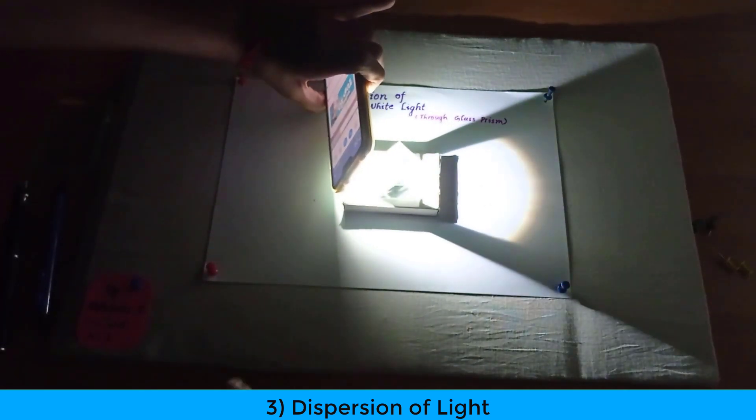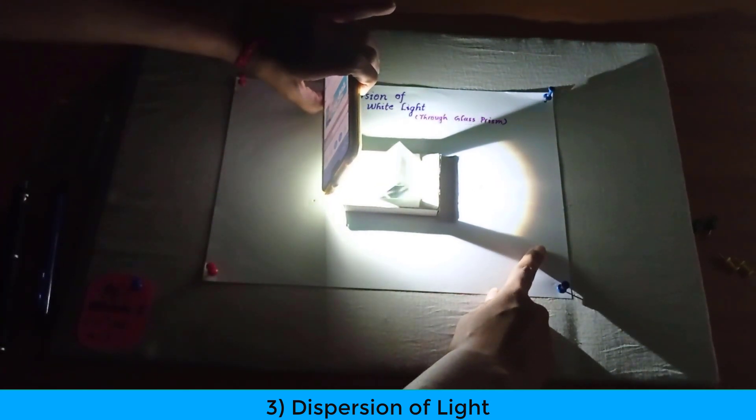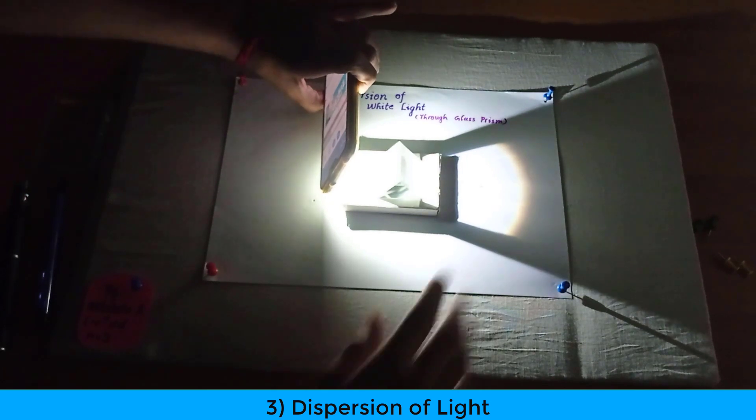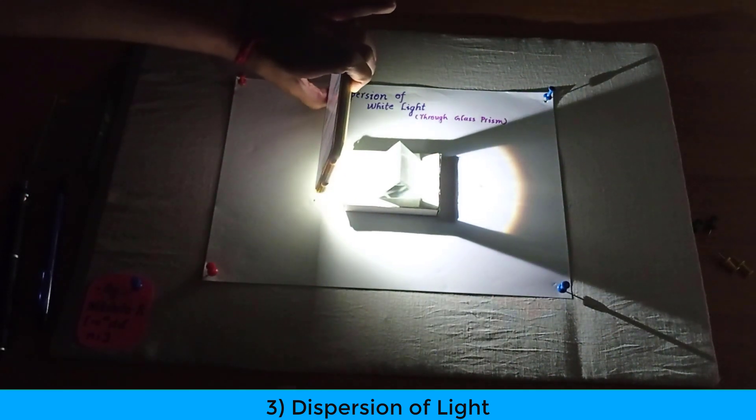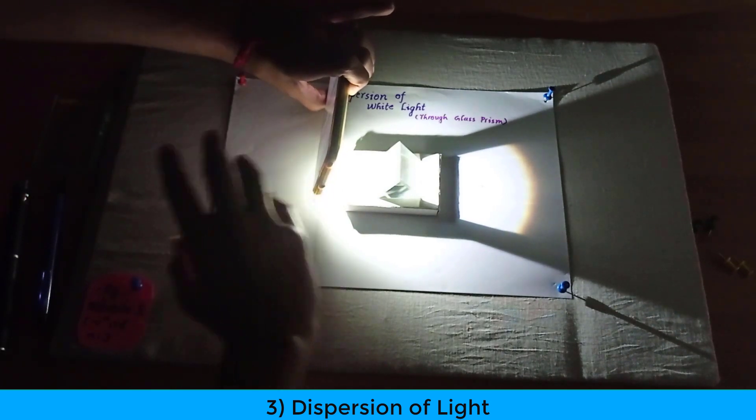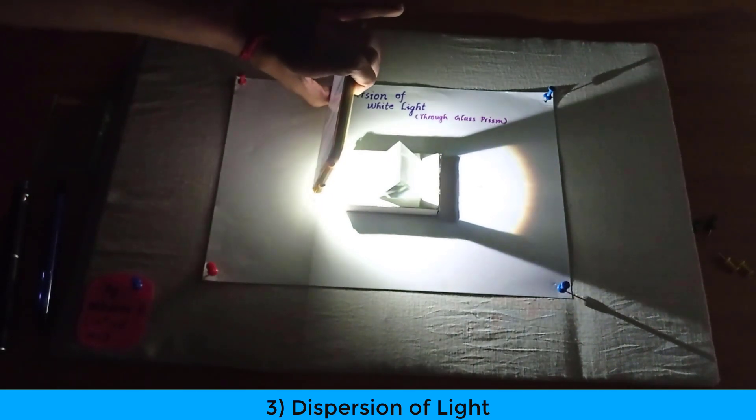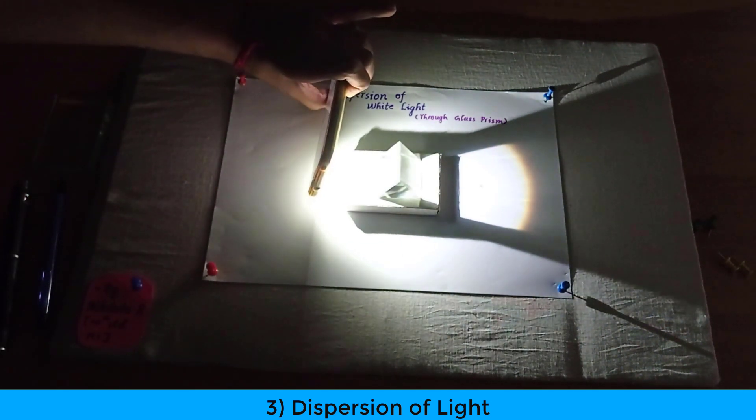And as you can see a beautiful band of colors is formed over here. And this band of colors is known as the spectrum. And this process of the white light splitting into seven colors is known as dispersion of light.